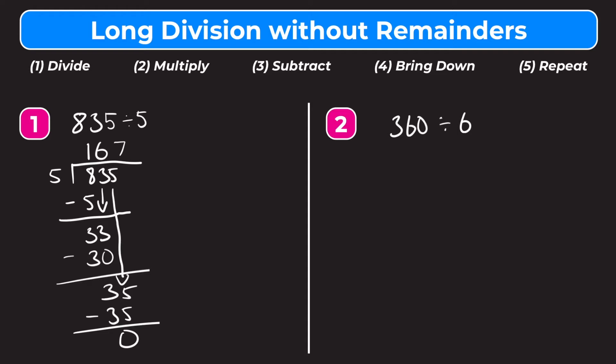Let's try number 2: 360 divided by 6. 360 is our dividend and goes under the bar; 6 is our divisor and goes outside the bar. Starting with step 1, divide: how many whole groups of 6 can go into 3? Zero whole groups fit, so we move over one digit to the right and use both the 3 and the 6. How many whole groups of 6 go into 36? That's 6.